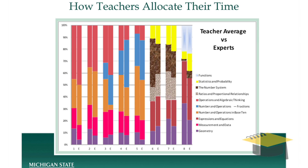I draw your attention to grades three, four, and five — it's the blue, that's fractions. One of the single most important topics in the early curriculum, the one that causes the most difficulty for students, the one that has to be mastered in order for students to move on to things like algebra. Look at the blue for the teachers and look at the blue for the experts. Teachers are allocating about half the time in third and fourth grade that the experts suggest would be necessary in order to adequately cover those topics. And since time is an incredible resource in this context, this is a major difference.